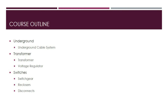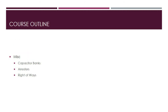This is followed by the section on switches, where we're going to look at how health index is being applied to switchgears, reclosers, and disconnects. Lastly, we are going to look at various other types of assets found within the power distribution system, such as capacitor banks, arrestors, as well as what we call the distribution right of ways.